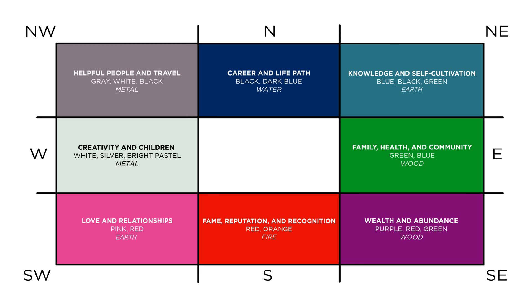And finally, at the center of it all is the earth element. This central portion of your home and space is all about yellow and earth tones. It's about being centered, your overall well-being — this is the area where all your good fortune culminates into a crescendo. If you're not looking to enhance a particular corner or element, really focus on being centered. That's what great chi is all about — the energy that surrounds you and how all those energies play together to make you feel more balanced, more centered, and more grounded.